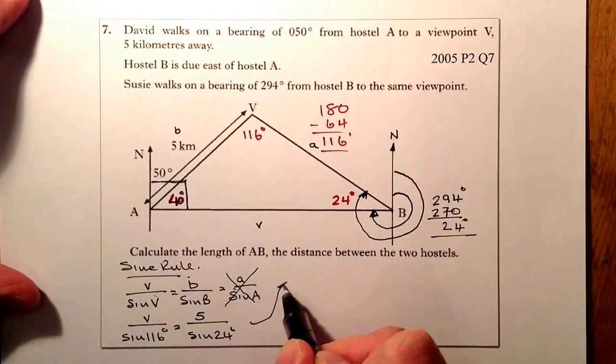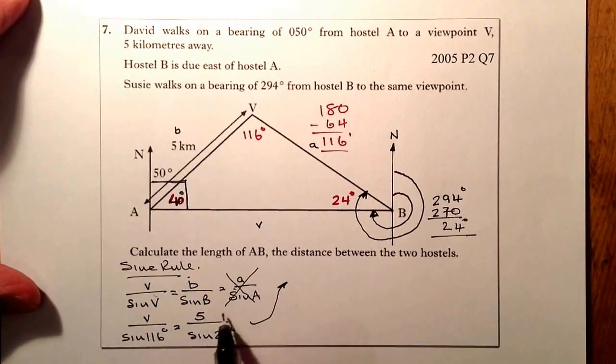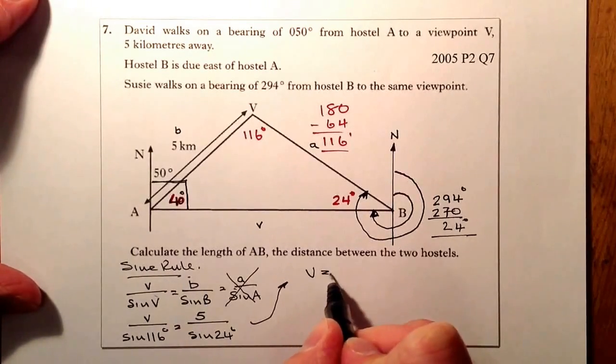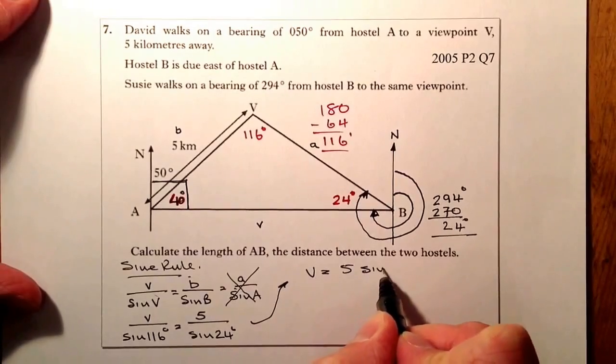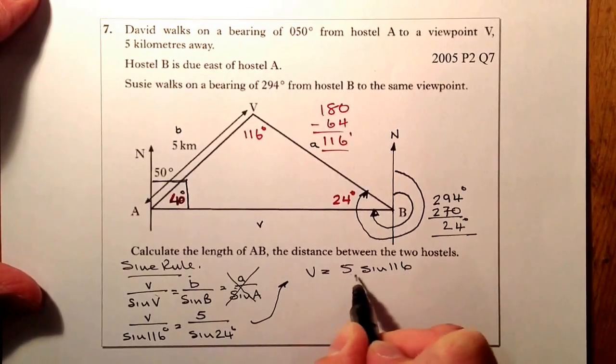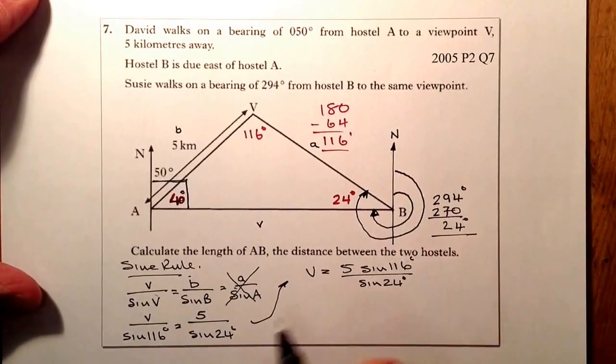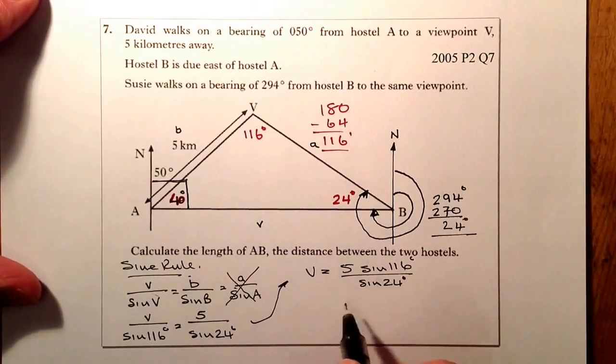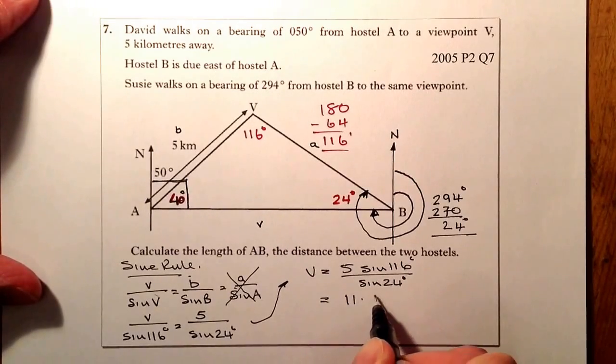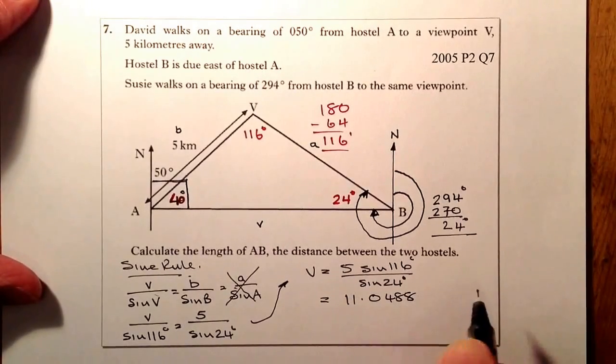From there, what I'm going to do is I'm just going to multiply. If I'm dividing by sine 116, I'm going to multiply by sine 116 on the other side. So what I have is v equals 5 times sine 116 all divided by sine 24 degrees. So when I multiply that out in the calculator, what I come up with is 11.0488.